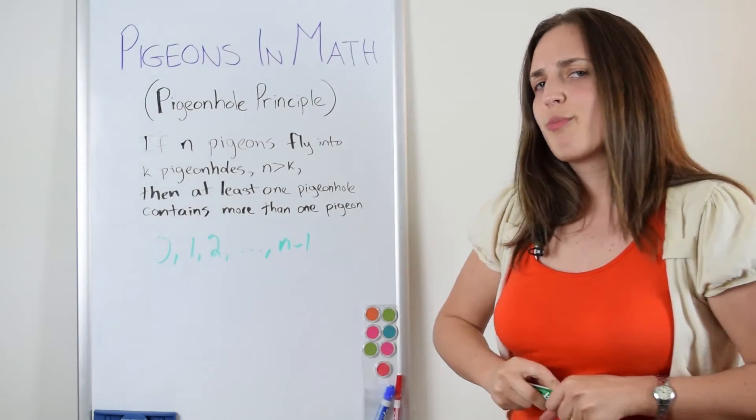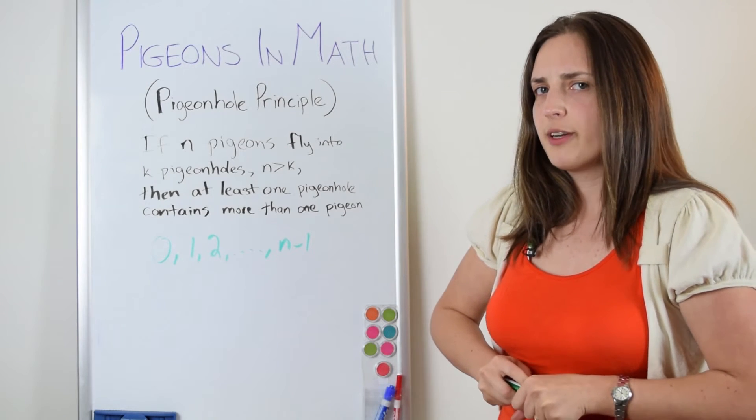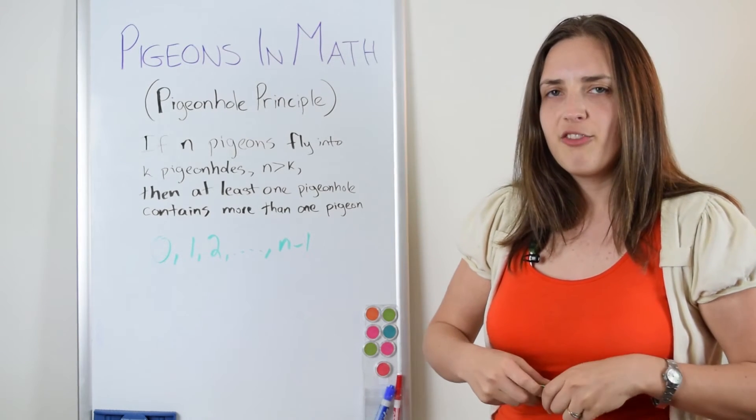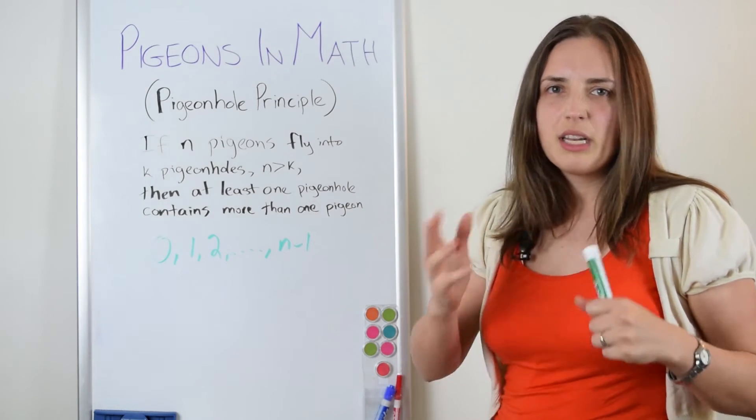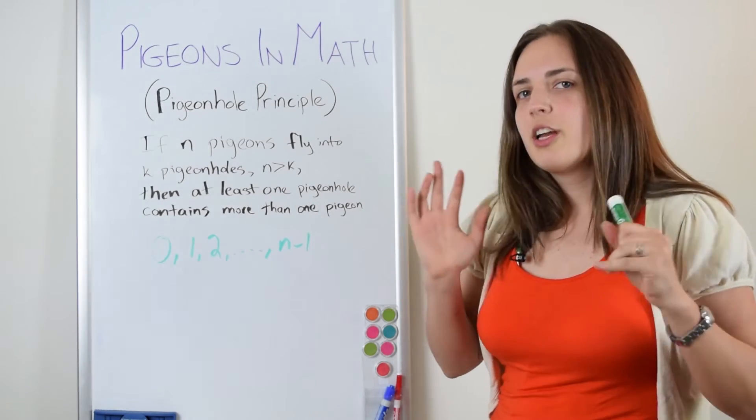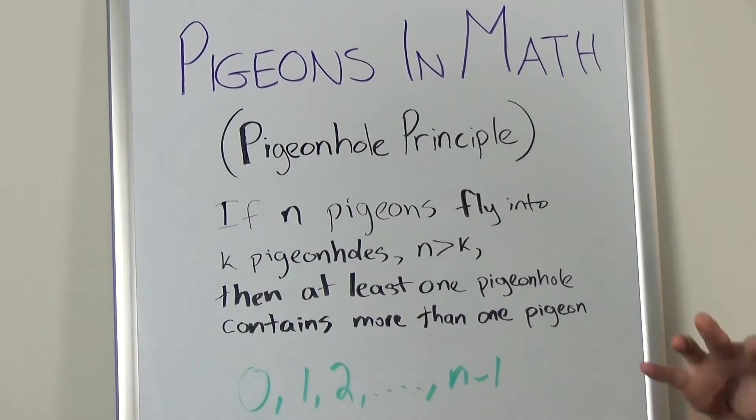Okay, so I've told you that we're planning to use the pigeonhole principle. And if you're trying to jump ahead of me, you're thinking, okay, we have n people, so like n pigeons, and we're going to be putting them into n minus one boxes. So those could be maybe thought of as the degrees.